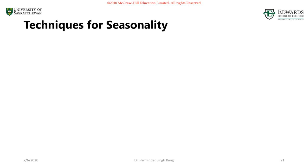Just a quick recap: what are seasonal variations? These are the regular reoccurring wave-like patterns that can be linked to events, weather, or some other repeating pattern. Some examples of seasonal variations: for a florist, peak in demand every year on Mother's Day and on Valentine's Day — that's a seasonal pattern.